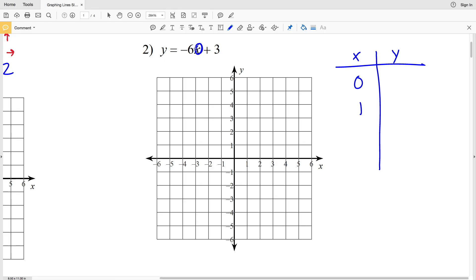So plugging 0 in for x, we'll get negative 6 times 0, which is 0, plus 3. So y will equal 0 plus 3, so y will equal 3. So our first point is 0, 3. So let's go ahead and graph that: 0, 3.